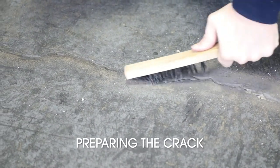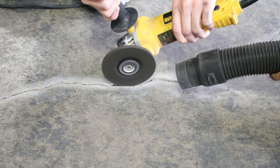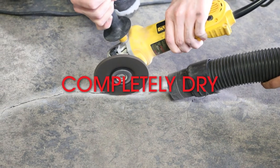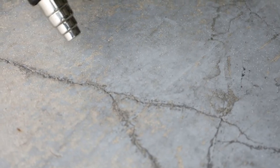To begin, clean and vacuum the area and chase the crack if needed with a right-angle grinder. The crack must be completely dry for a successful repair. If it is not dry, you should either wait for the crack to dry or use a heat gun or hair dryer to evaporate the moisture inside the crack.